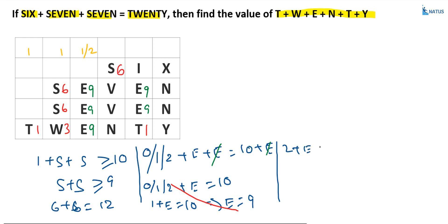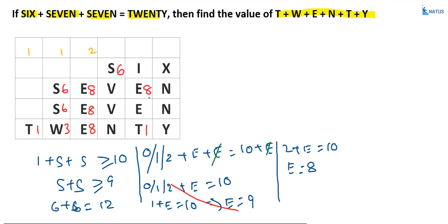Next case: carry equals 2, so 2 plus E equals 10, giving E equals 8. Substitute E equals 8: 2 plus 8 plus 8 equals 18, with 1 carry-over. Now substitute the value of E equals 8 wherever E exists. So 2 plus 8 plus 8 equals 18 with 1 carry-over. We now know the value of E.